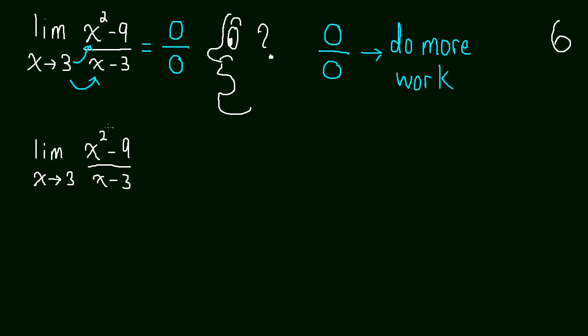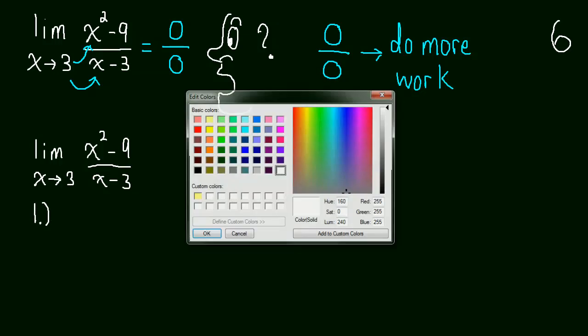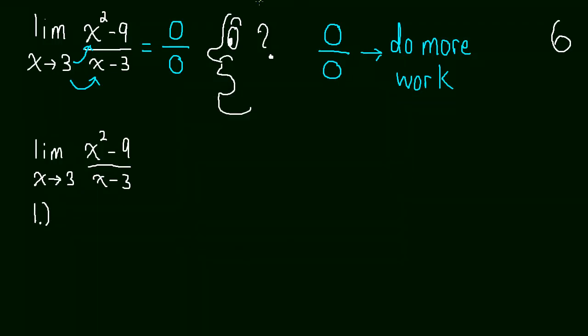So hopefully you did pause the video and you're back now and you've had some thoughts. What I'm going to suggest is I'm going to suggest that we use the difference of squares. So let's first remember what the difference of squares is. The difference of squares is when you have an expression a squared minus b squared. You can factor that to being a minus b times a plus b.